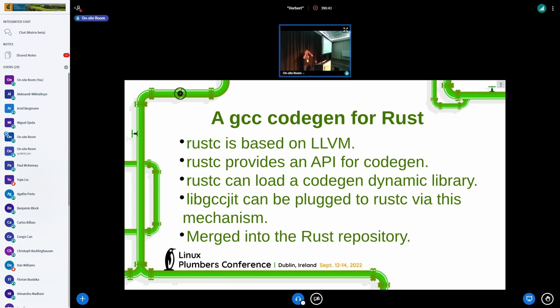So as you probably know, the Rust compiler is based on LLVM. However, it provides an API to plug other code generation. And that can be used, for instance, to use GCC to generate the code instead of LLVM or CraneLift.